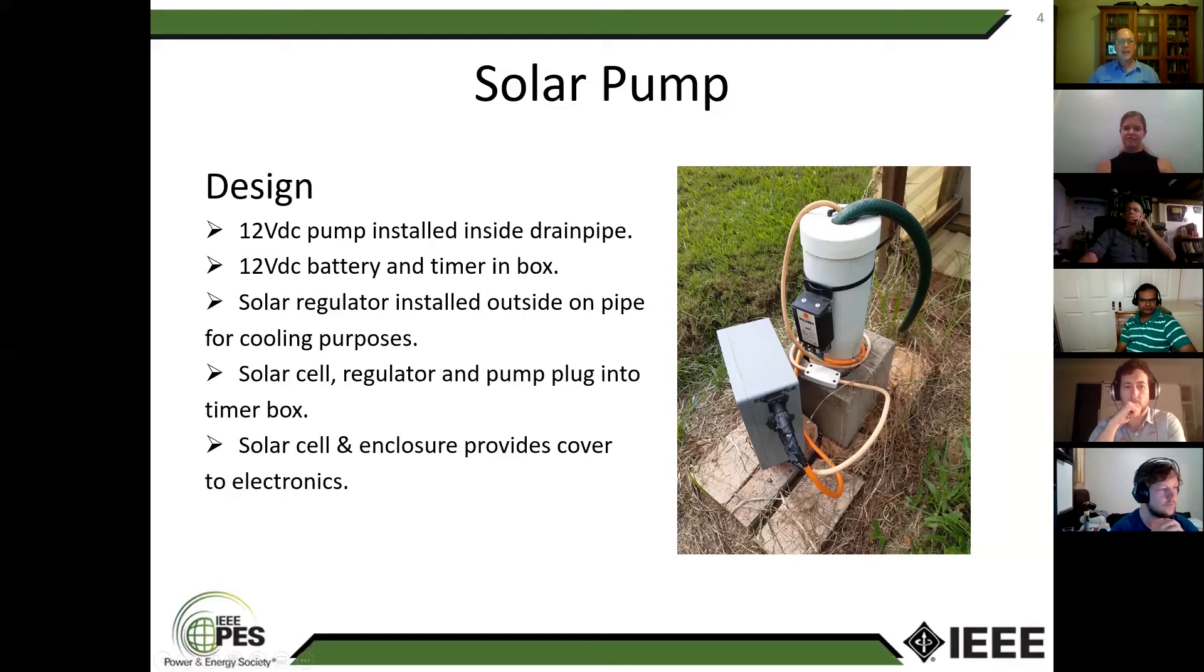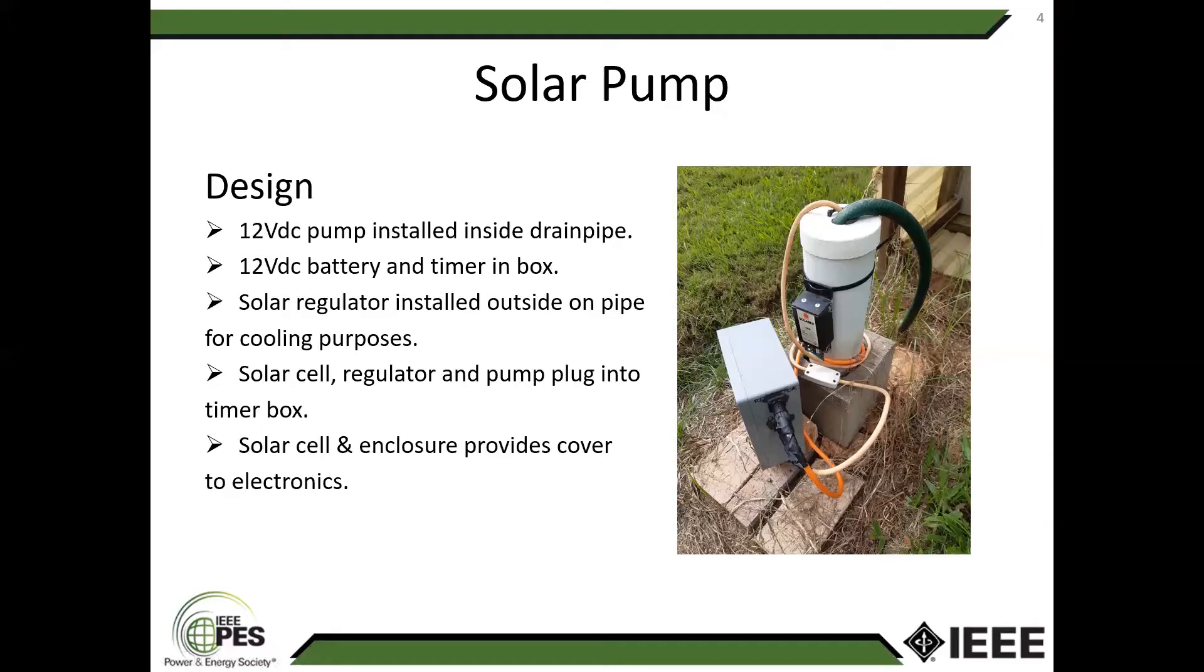Everything plugs into the box. The solar cell plugs into one side of this box. The regulator and the pump plug into different sockets on that little box. The solar cell and the enclosure fits over the top so it gives protection to the electronics, which was my main motivation. But my wife also liked the idea that she didn't have to look at my electronics and boxes sitting out in the yard.